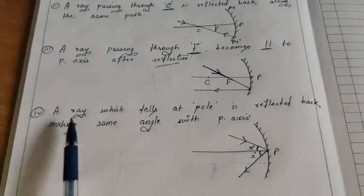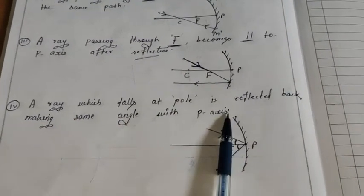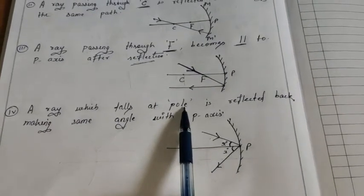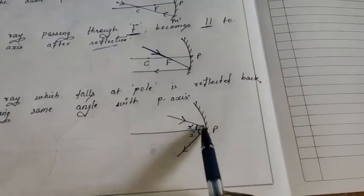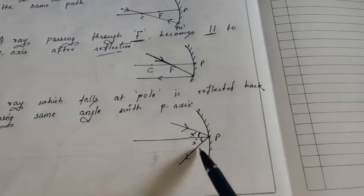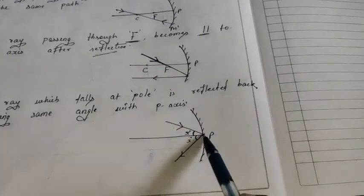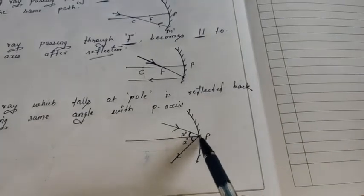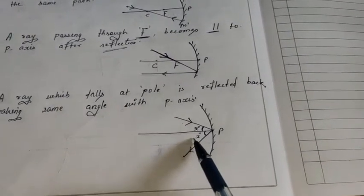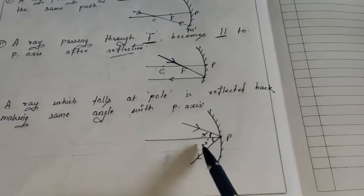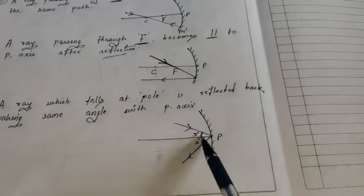Fourth rule — jo sabse zyada important hai: Ray which falls at the pole is reflected back making the same angle with the principal axis. Ek ray jo pole par fall hoti hai, woh principal axis ke saath same angle banaate hue reflect karti hai. Jaise yeh incident ray pole par fall kar rahi hai, toh yeh angle aur yeh angle barabar ho jaata hai.